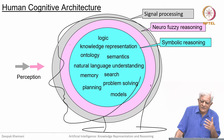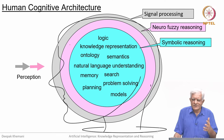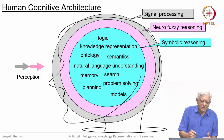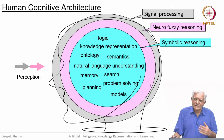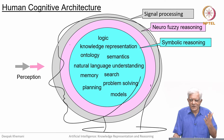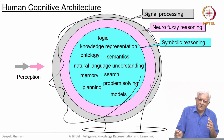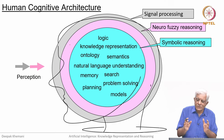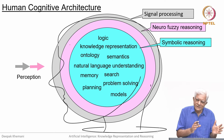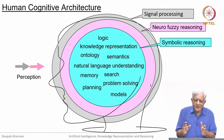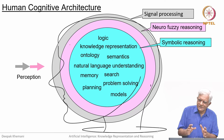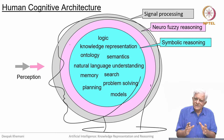If you look at the human cognitive architecture, we can think of it as a three-layered architecture. The outermost layer, shown in grey here, is the signal processing layer — we see with our eyes, we hear with our ears, and so on. Then there is the next layer, which is the neuro-fuzzy layer, which converts signals into symbols. In our course, we are interested in symbols and in reasoning with symbols.